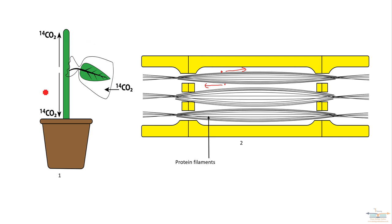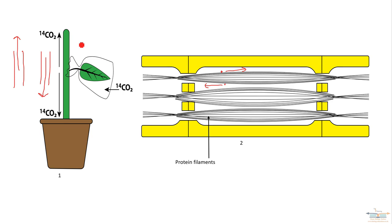Going back to image one, what can be happening is movement up in one phloem vessel and movement down in a separate phloem vessel. We don't know exactly whether movement occurs in two separate phloem vessels or one single vessel. Image two shows it is possible to get bidirectional movement in a single phloem vessel. So these are two pieces of evidence supporting bidirectional movement, which can occur in separate phloem vessels or within the same phloem vessel.